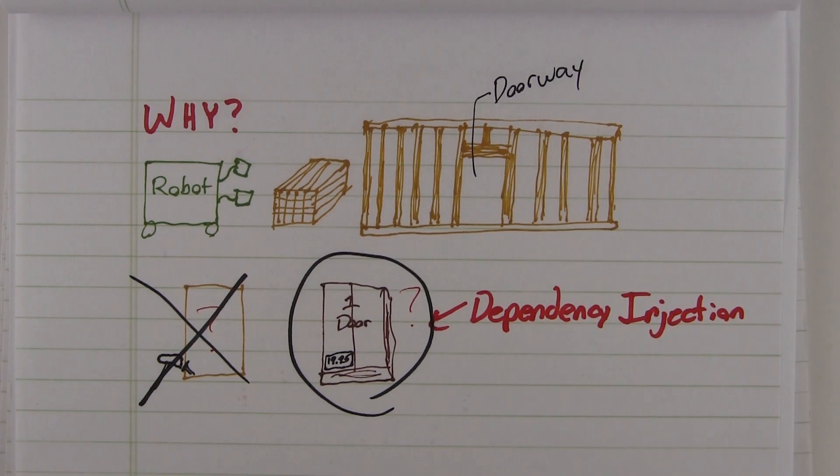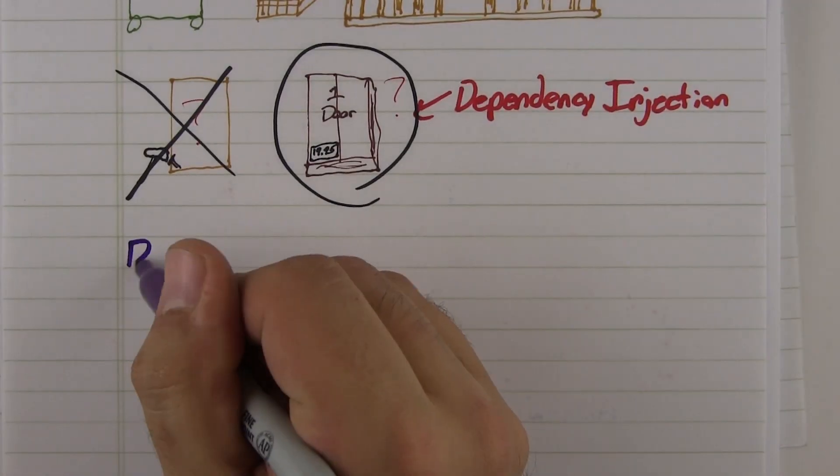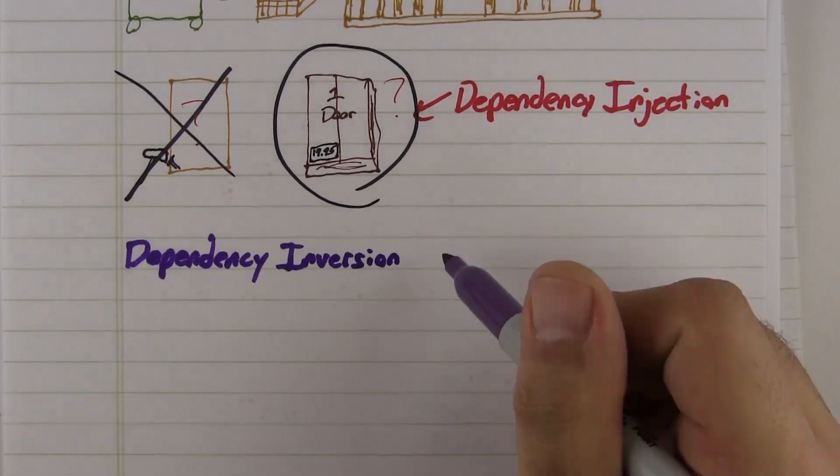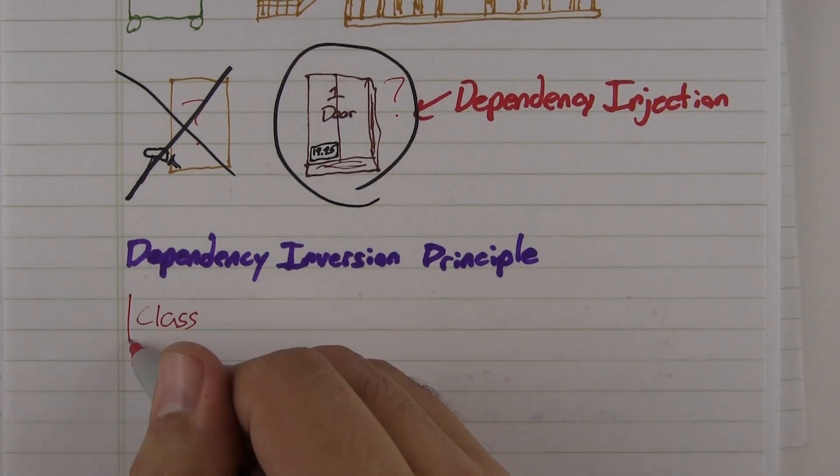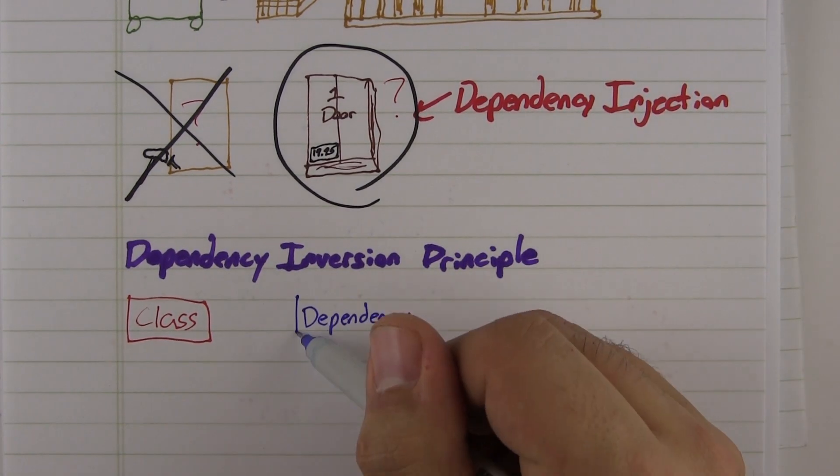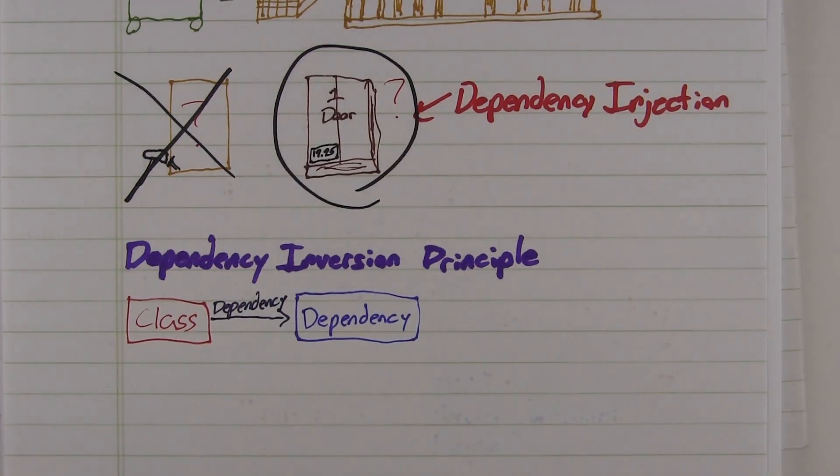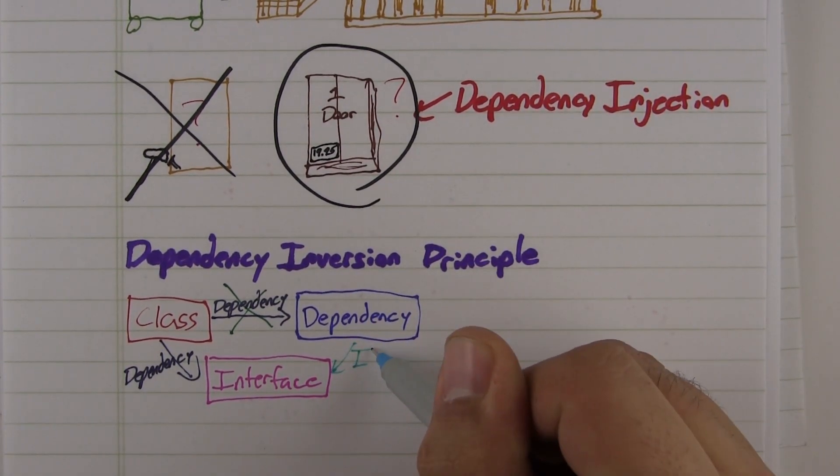It decouples your class's construction from the construction of its dependencies. The reason that this is so important is the dependency inversion principle. Basically, dependency inversion is the principle that code should depend upon abstractions. By depending upon abstractions, we're decoupling our implementations from each other.